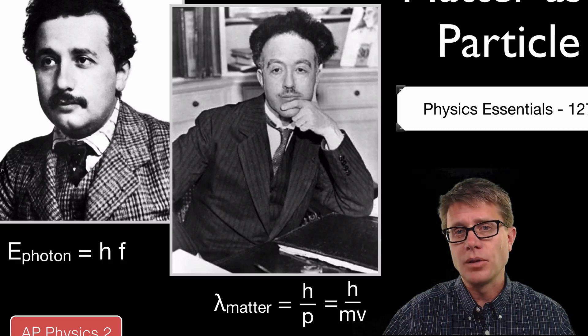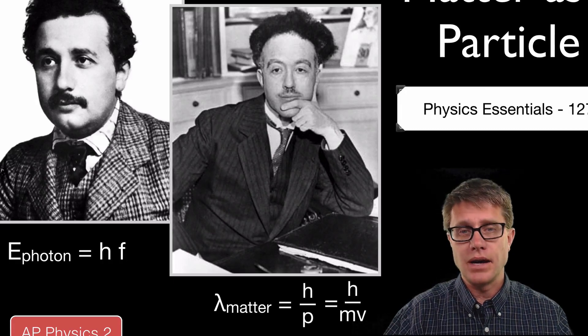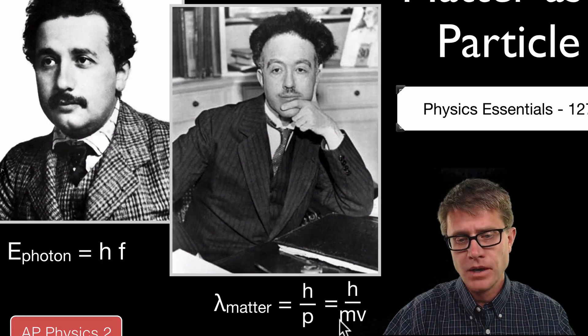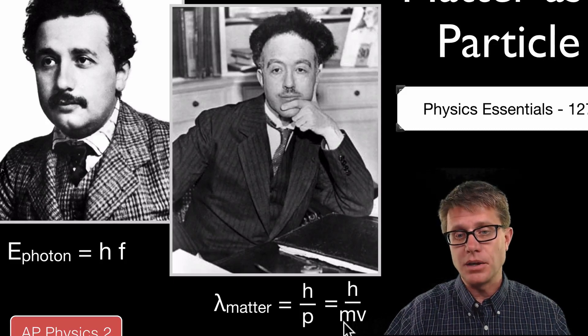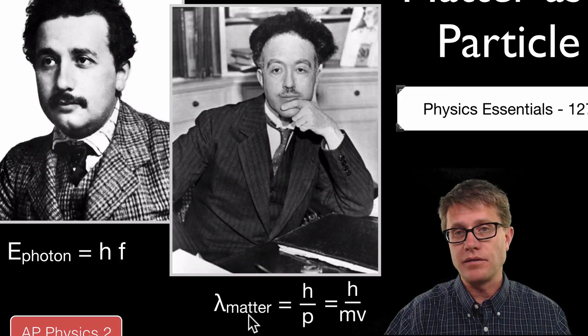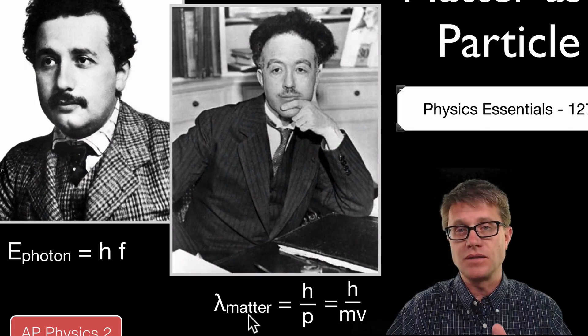And so the problem of why we do not see matter like ourselves as waves is found in this formula. And so if you look at my mass, my mass is so big compared to Planck's constant that you get a wavelength that is incredibly small so we do not even see it.